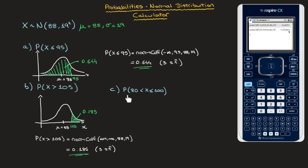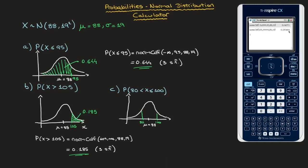Finally, for the last probability, we need to find the probability that X be between 80 and 100. I start by illustrating this on a bell curve — a vertical axis, a horizontal axis, and a bell curve. The mean is still mu equals 88. Now I need to show the area, and for that I look for 80 as well as 100 on the x-axis. The area we need to find is the area between 80 and 100, which I'm currently hatching in green.